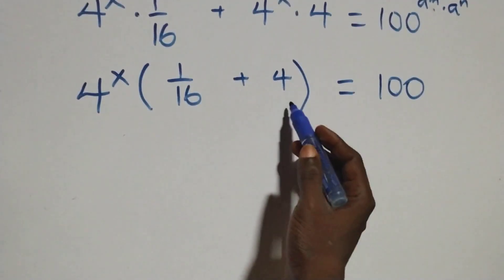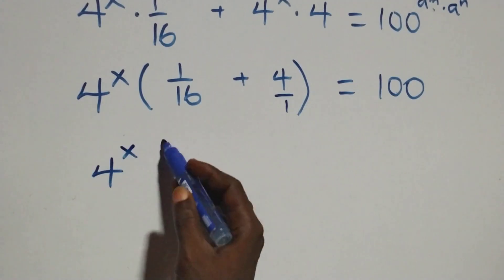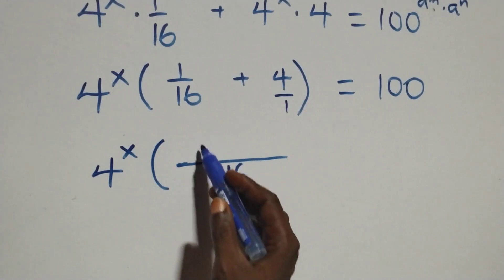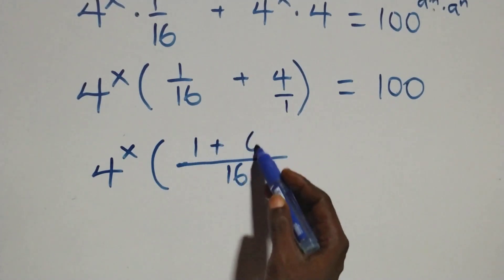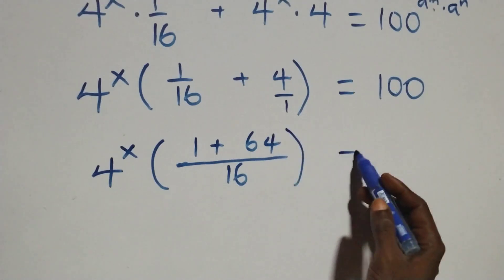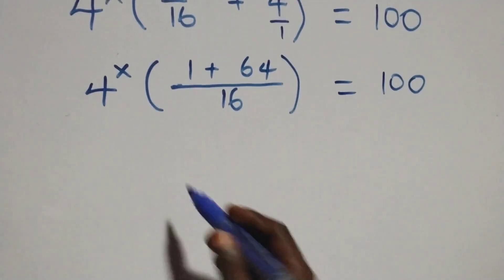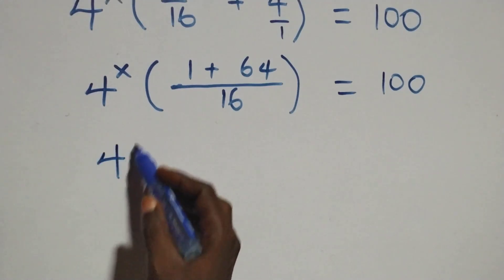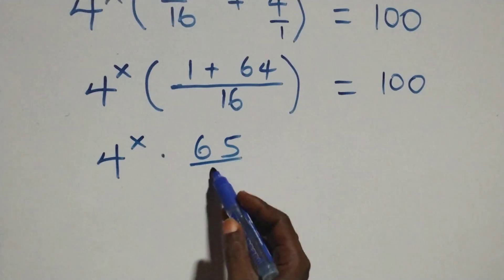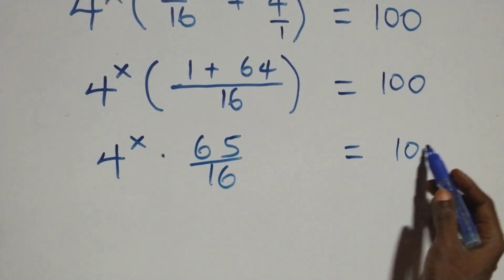We can bring this together as one fraction. This is 4 over 1 and we have 4 raised to power x, into bracket 1 over 16 plus here we can write 1 plus 64, then close bracket equals 100 on this side. That is, we have 4 raised to power x times 1 plus 64, that is 65 over 16, which equals 100 on this side.